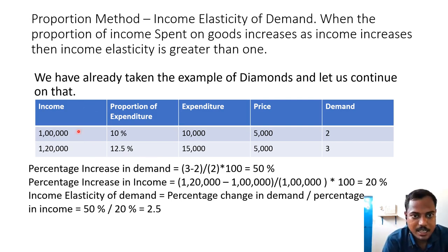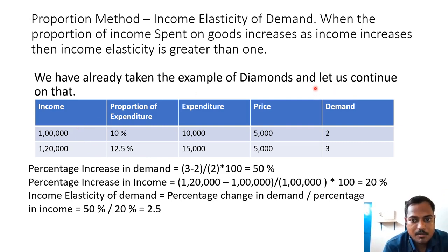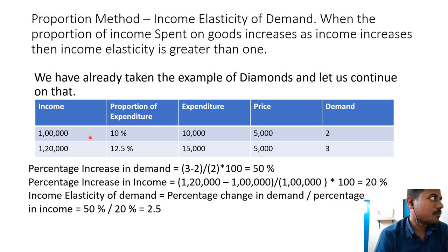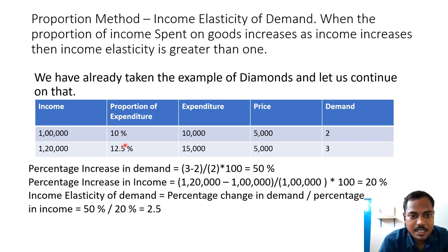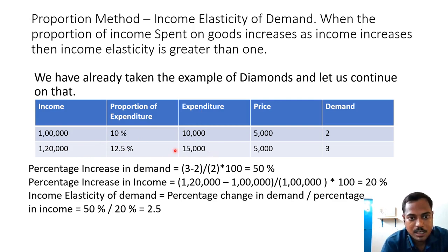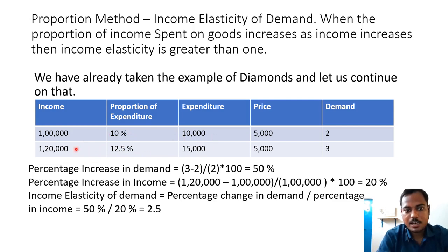Let us continue with the diamond example. When the consumer's income is Rs. 1 lakh, he is spending 10% of his income on diamonds — that is a total expenditure of Rs. 10,000. When the income increases to Rs. 1,20,000, since diamond is a luxury good, it is highly likely he will increase his percentage spent on diamonds — he now spends 12.5% of his income, so the expenditure comes to Rs. 15,000 (1,20,000 × 12.5% = 15,000).